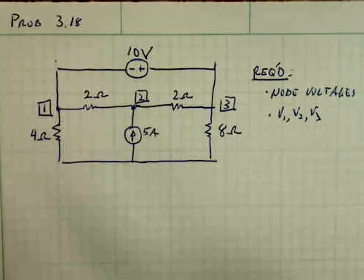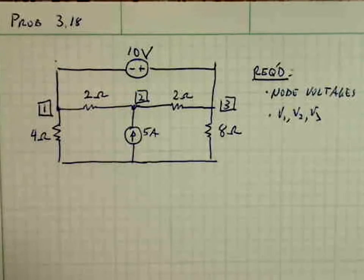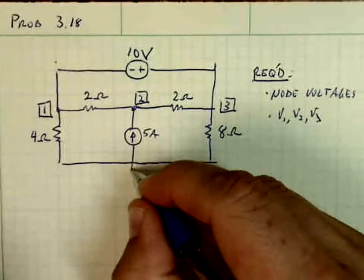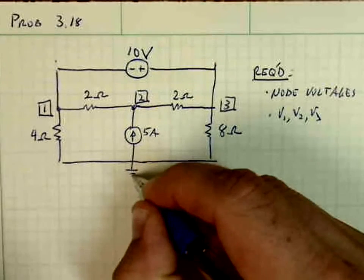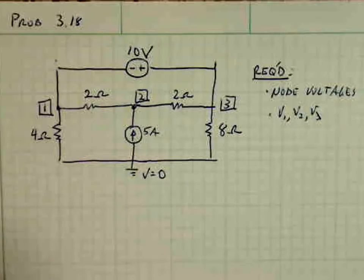Okay, so the first thing we want to do is select a reference node, which is conveniently selected at the bottom. V is equal to 0.